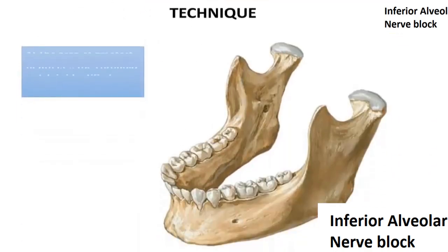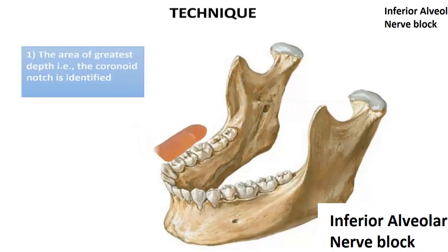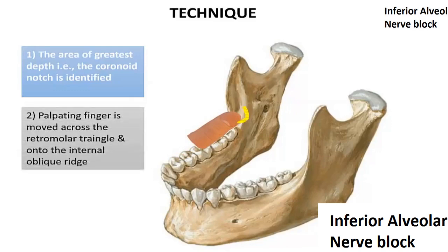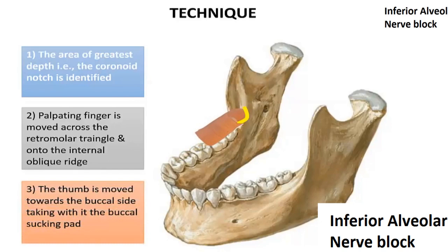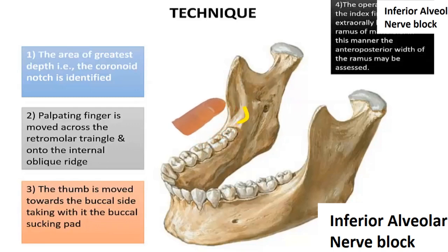For the technique: the area of greatest depth, that is the coronoid notch, is identified. The thumb is moved to identify the coronoid notch. Then the palpating finger is moved across the retromolar triangle and onto the internal oblique ridge. The thumb is then moved towards the buccal side, taking with it the buccal fat pad. The operator may place the index finger extra-orally behind the ramus of the mandible so that the anterior-posterior width of the ramus can be assessed.